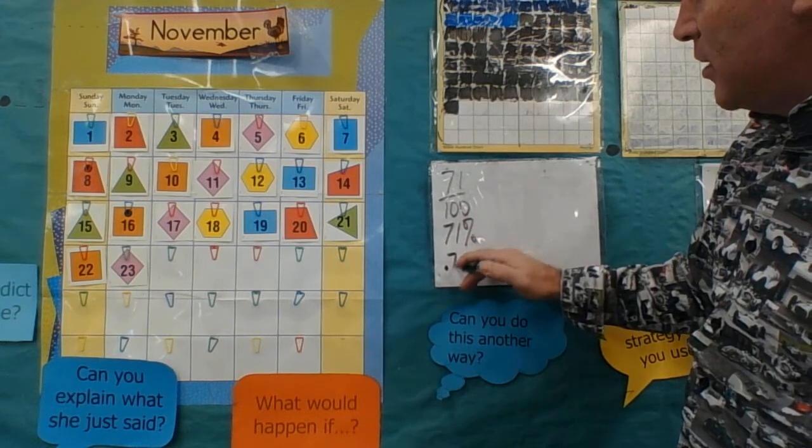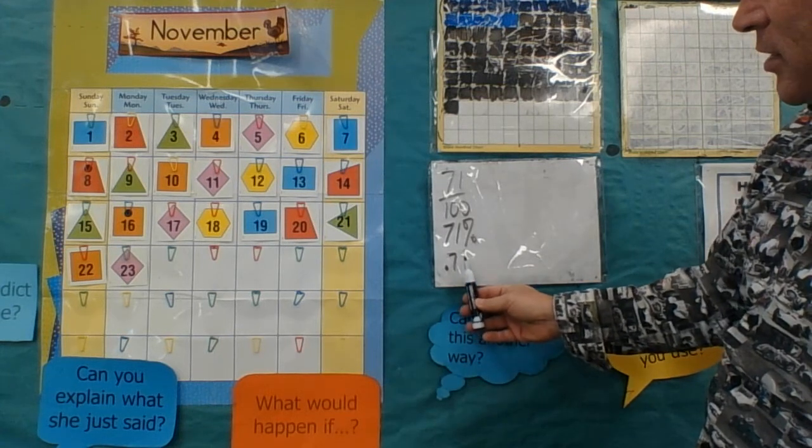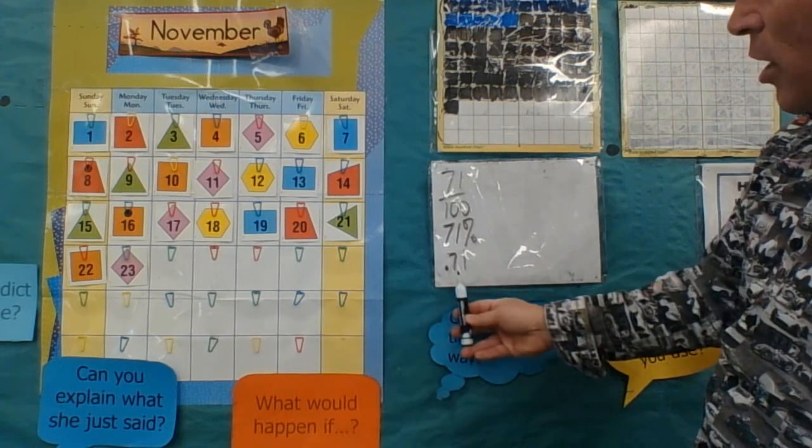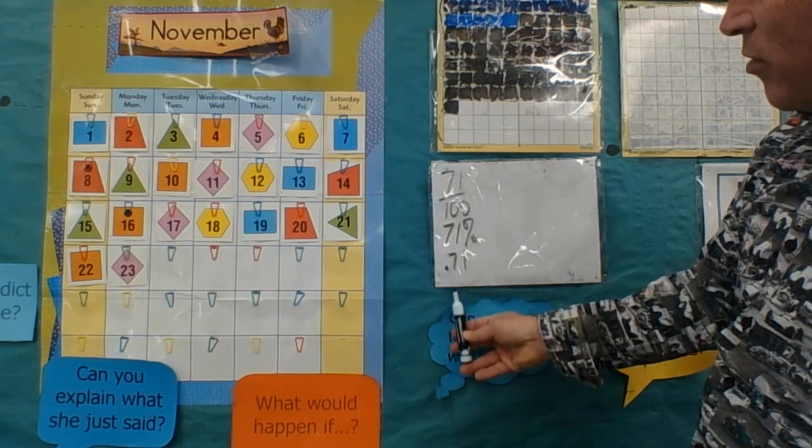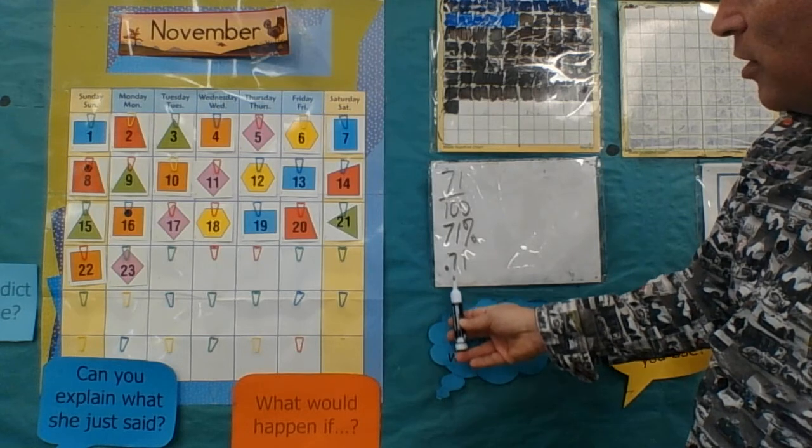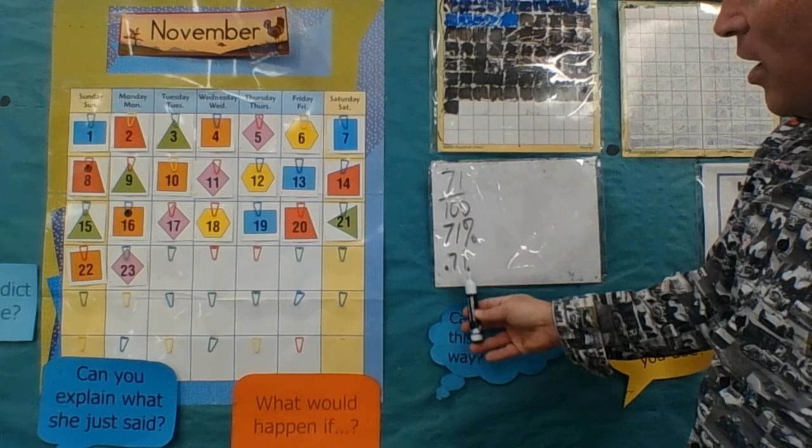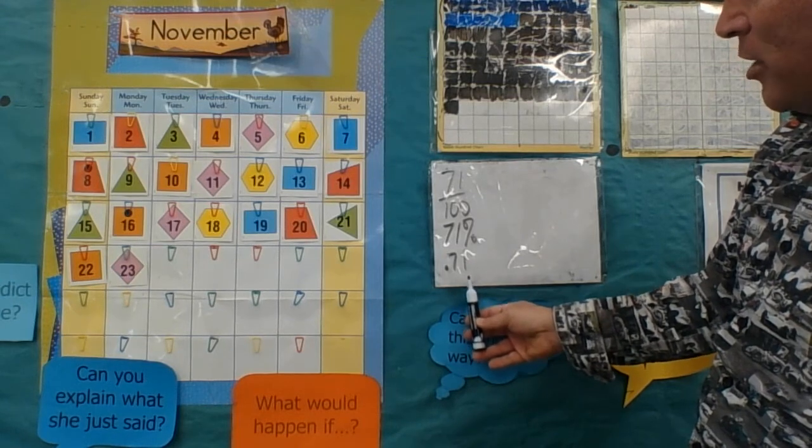And 71 hundredths, because this is the tenths place value and this is the hundredths place value, meaning anything in this number is how many we have of equal groups of 10, a whole that's been cut up into 10.